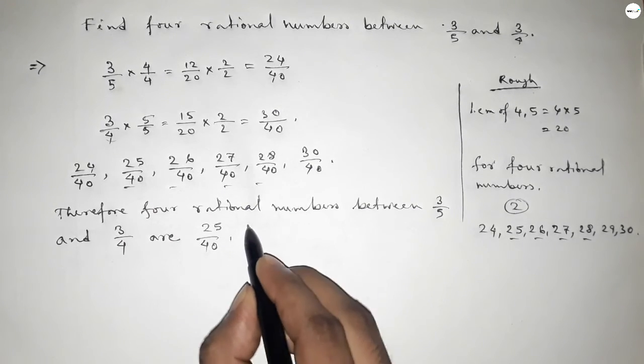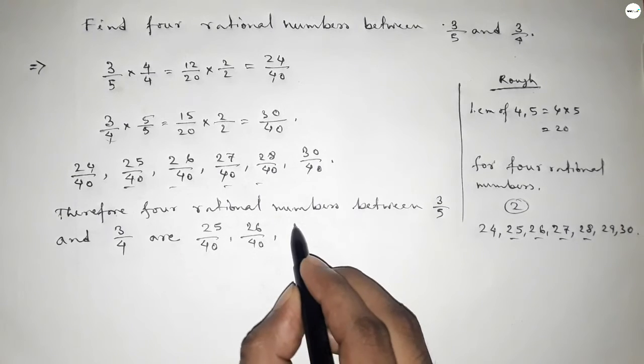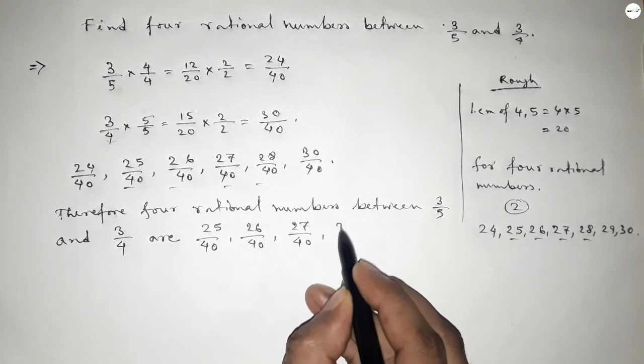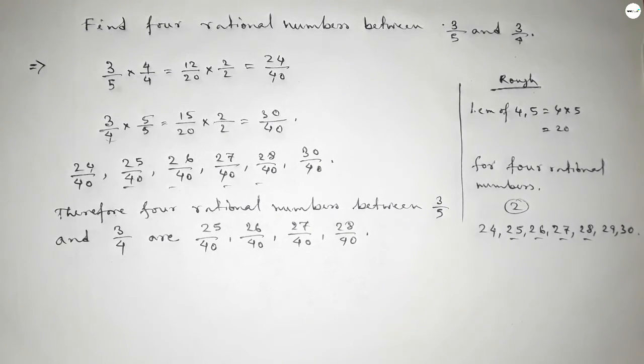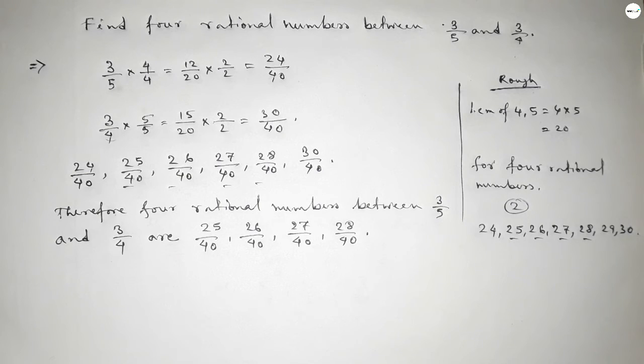The first one is 25/40, 26/40, 27/40, 28/40. So this is the process to find out four rational numbers between 3/5 and 3/4.